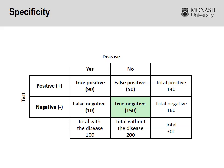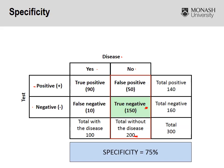Using that same example with hypothetical numbers, this time we're calculating specificity. Disease is either present or absent, and the test is positive or negative. We're looking at our true negatives: 150 divided by the total number of participants without the disease, which is 200. The formula is D over D plus B, giving us a specificity of 75%. The higher the specificity, the better — in this case, the test is 75% accurate at correctly identifying those that don't have the disease when they have a negative result.